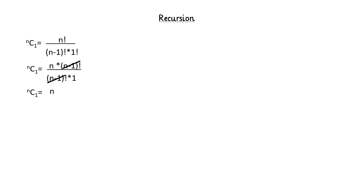Did you notice something here? I have expressed factorial n as n into factorial n-1. Because I know if I express factorial n in terms of factorial n-1, it will be easy for me to solve this problem. So this is how recursion works. In a similar way, you will find many problems in programming where a recursive solution will be much easier than the iterative one, and you will choose the recursive approach. Expressing factorial n in terms of factorial n-1 — this is nothing but recursion.